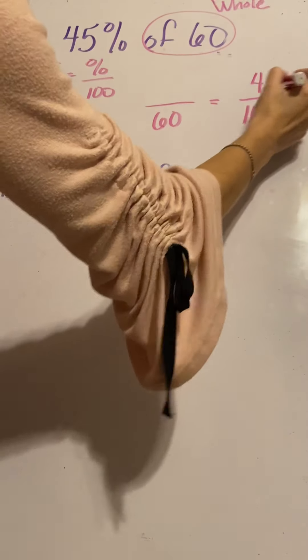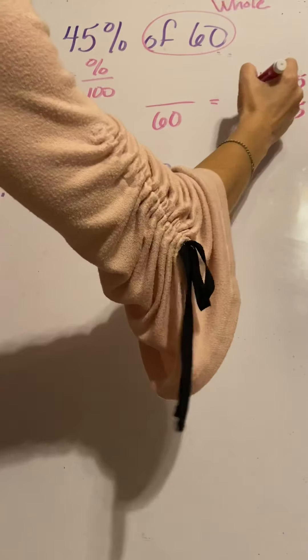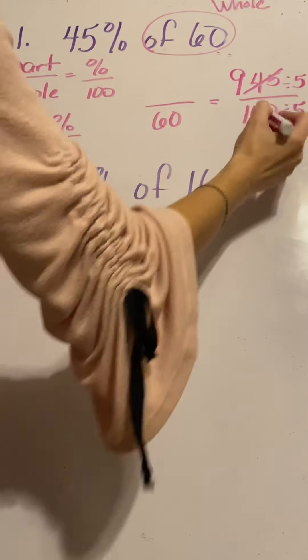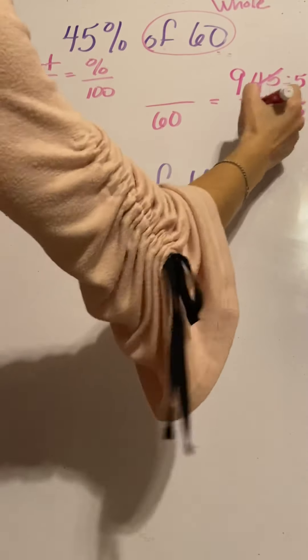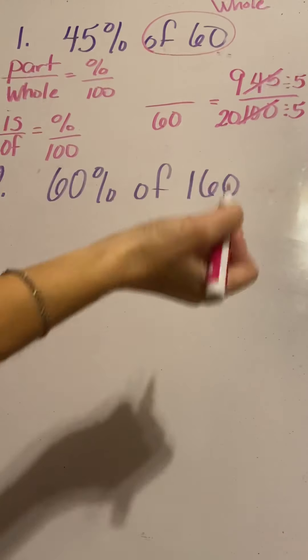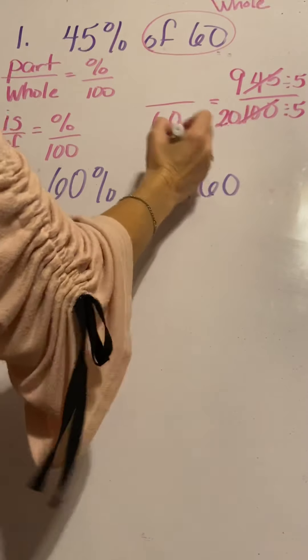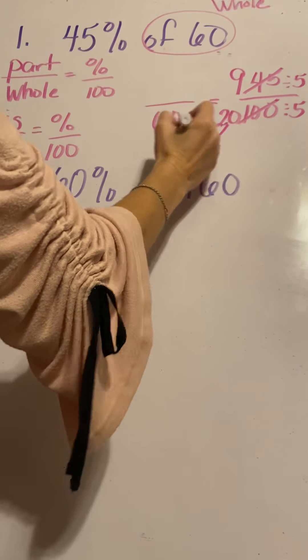All right, so 45 divided by 5 is 9. So I'm going to slash the 45 and put a 9 in its place. 100 divided by 5 is 20. So I'm going to slash that and put a 20 in its place. Now when I do that and I look at 20 and 60, there's a relationship there. Like, I can multiply times 3.